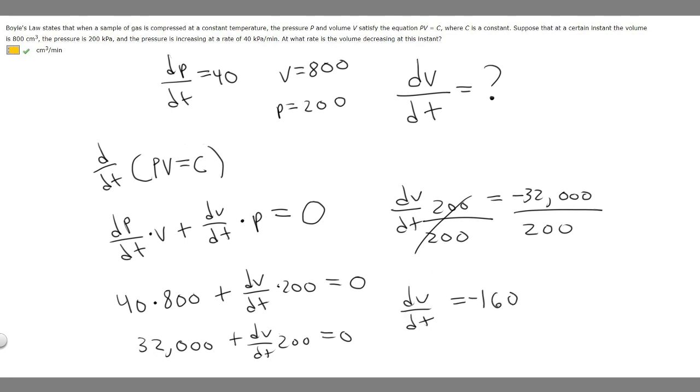This is the rate of change of volume with respect to time, but what they're asking us is what is the rate at which it's decreasing. Rates don't have positive or negative, so it's just going to be 160. So 160 is going to be the answer to this, 160 centimeters cubed per minute.